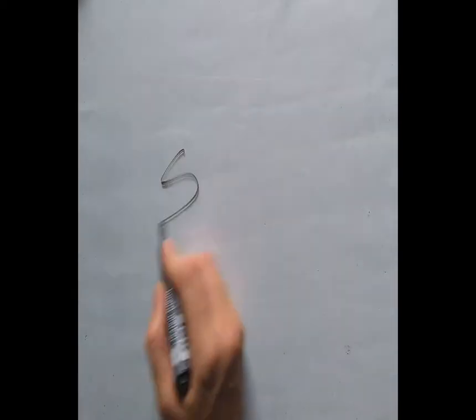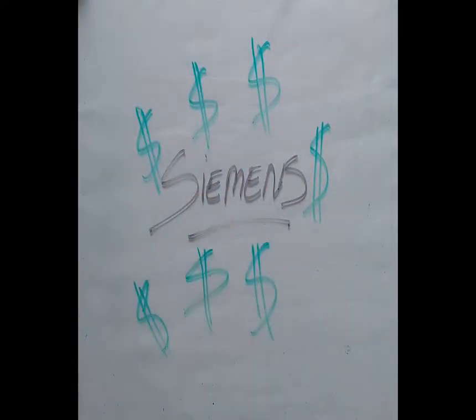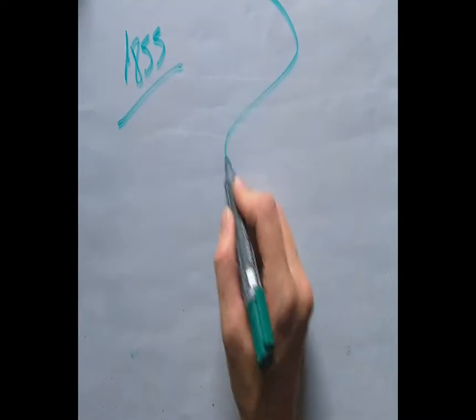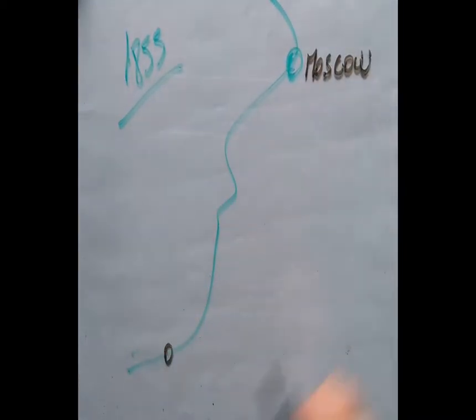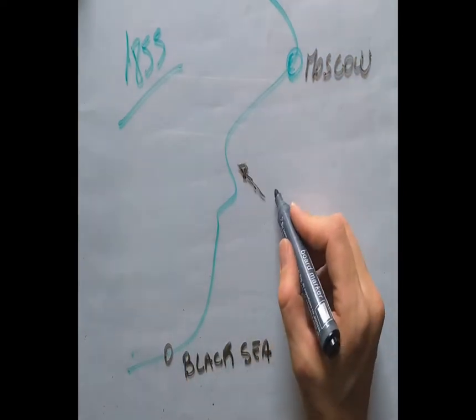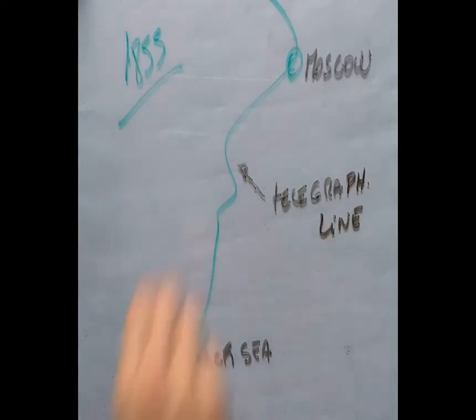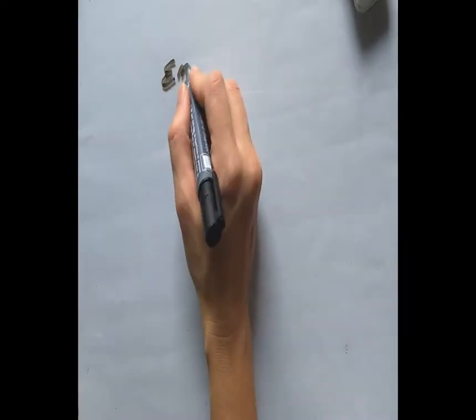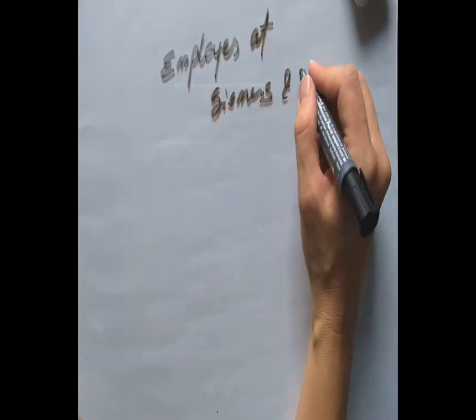The business flourishes to some extent because current events play into the hands of the Siemens Brothers. In 1855, the company is awarded the contract to run telegraph lines all the way to the Black Sea. This is to be done as quickly as possible with a very fixed budget, passing through the Crimean war zone.